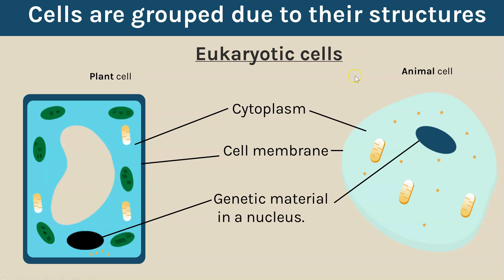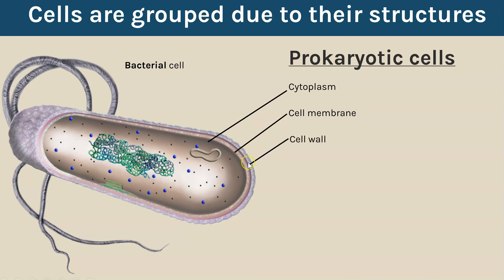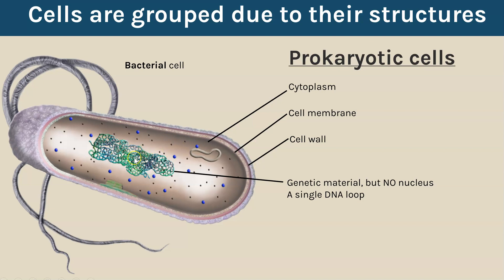Prokaryotic cells — bacterial cells — still have a cytoplasm, which is the site of most chemical reactions. They have a cell membrane, which is the layer that controls what can enter and exit the cell. They also have a cell wall to provide structural support. Their genetic material is a single loop — it looks complicated because it's a very large, tangled loop — but the key thing is it's not found inside a nucleus.